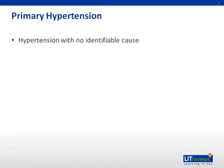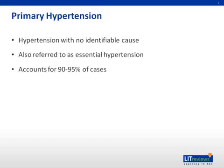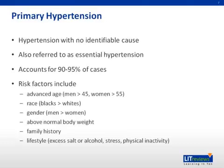The most common form of hypertension is primary hypertension, which is also referred to as essential hypertension. This form accounts for 90% to 95% of all cases. Risk factors for primary hypertension include advanced age, race, gender, above normal body weight, family history, and lifestyle factors such as excess salt, excess alcohol, stress, or physical inactivity.